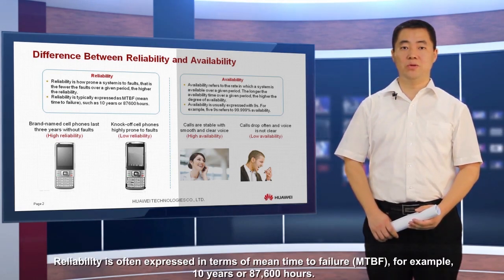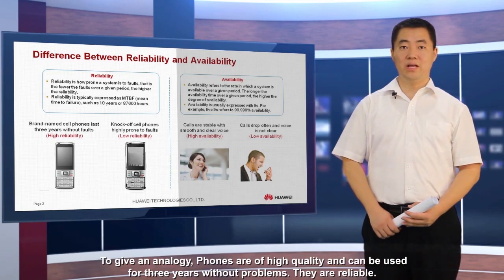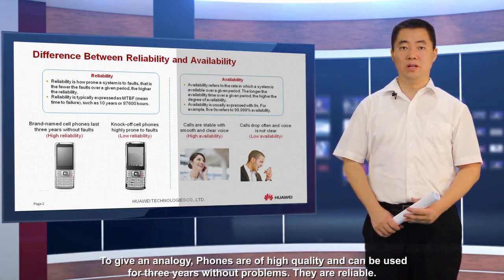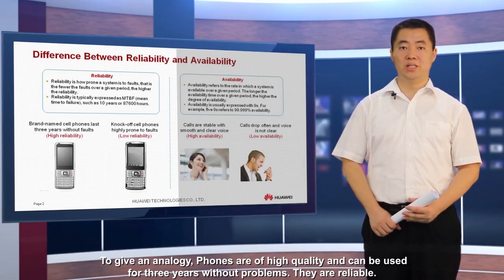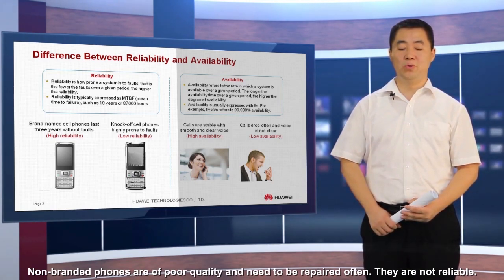Reliability is often expressed in terms of mean time to failure, MTBF — for example, 10 years or 87,600 hours. To give an analogy, branded phones are of high quality and can be used for three years without problems — they are reliable. Non-branded phones are of poor quality and need to be repaired often — they are not reliable.